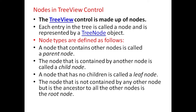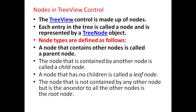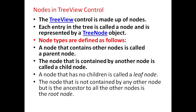The TreeView control is made up of nodes. Each entry in the tree is called a node and is represented by a TreeNode object. Different types of nodes are defined as follows: a node that contains other nodes is called a parent node; the node that is contained by another node is called a child node.